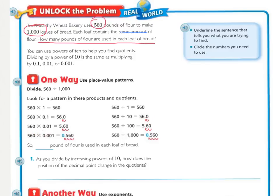560 times 1 hundredth is 5 and 6 tenths — you've moved the decimal two places over. 560 divided by 100 is 5 and 6 tenths; there are two zeros in 100, so you've moved it two places. 560 times 1 one-thousandth equals 56 hundredths, because you've moved the decimal three places. With that zero, you don't have to say thousandths.